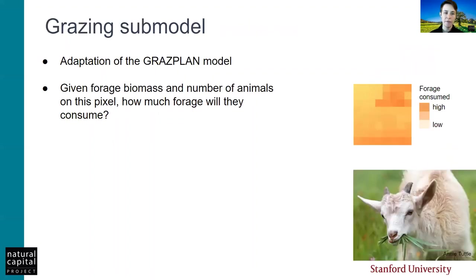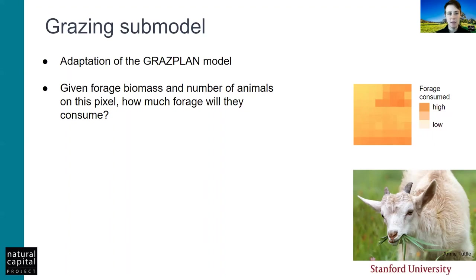Next, the animal offtake or grazing submodel. This is adapted from the Graze Plan model. It essentially takes forage biomass and the density of animals on each pixel, and predicts how much forage they will consume. This is driven by animal characteristics, their need for forage, their demand, their ability to access the forage, and the nutrient content of the forage. If forage is predicted to be of high nutrient content, animals will actually be able to eat more. From this, we get a prediction of how much forage is consumed by animals on each pixel for that monthly time step.